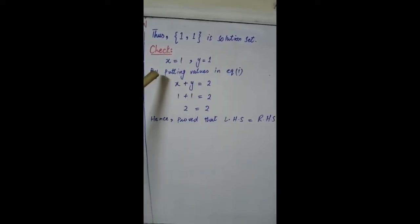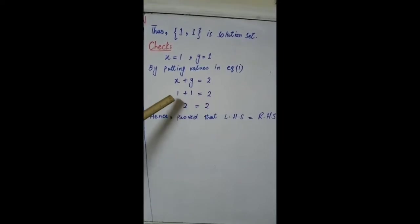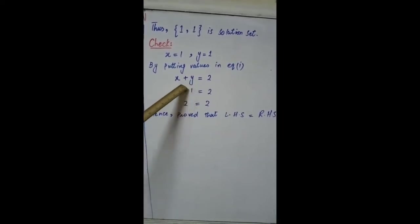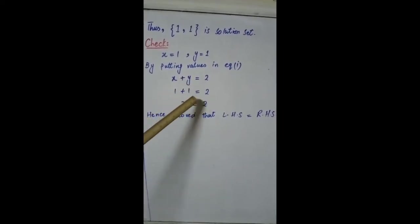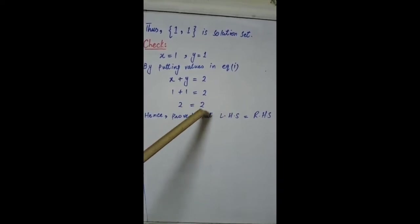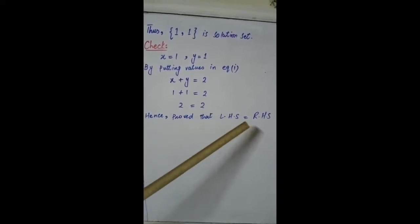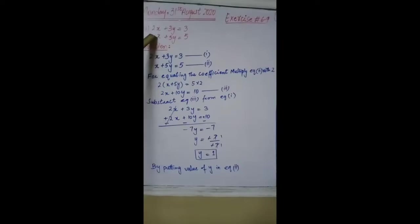Check: x = 1, y = 1. Putting values in equation 1: x + y = 2 → 1 + 1 = 2, and 2 = 2. Hence proved that left-hand side is equal to right-hand side.